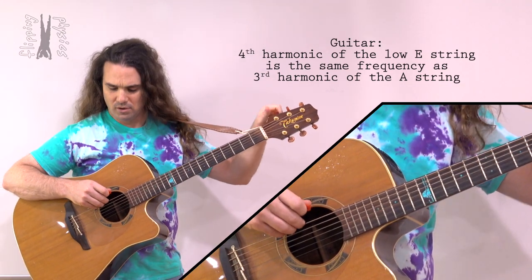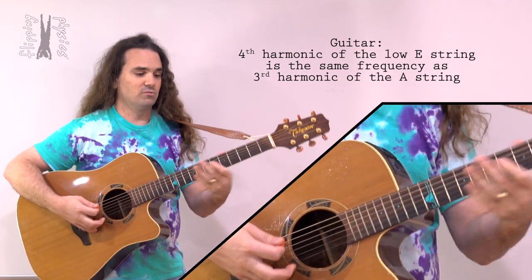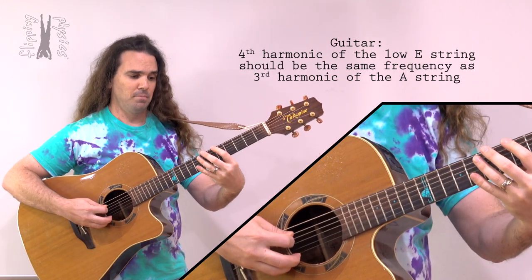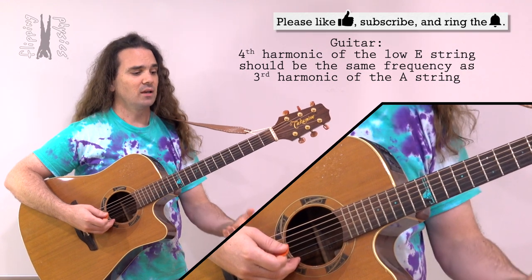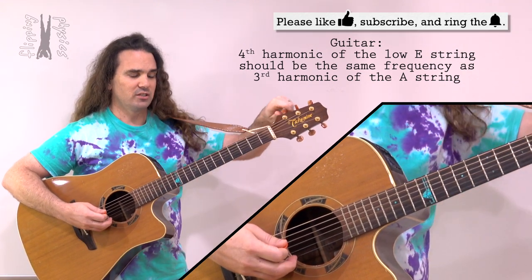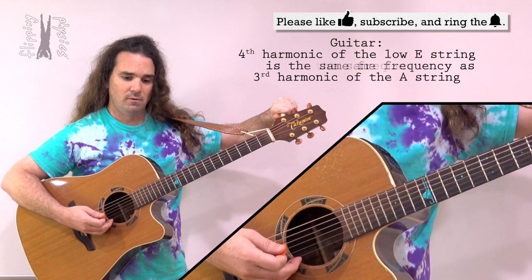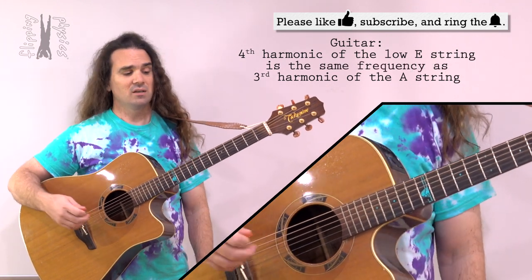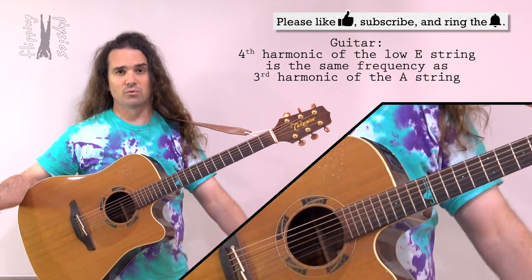One more time. So again, if one of the strings is slightly out of tune with the other one, you hear beats. And what you can do is adjust the frequency so you no longer hear beats and the two are in tune with one another.